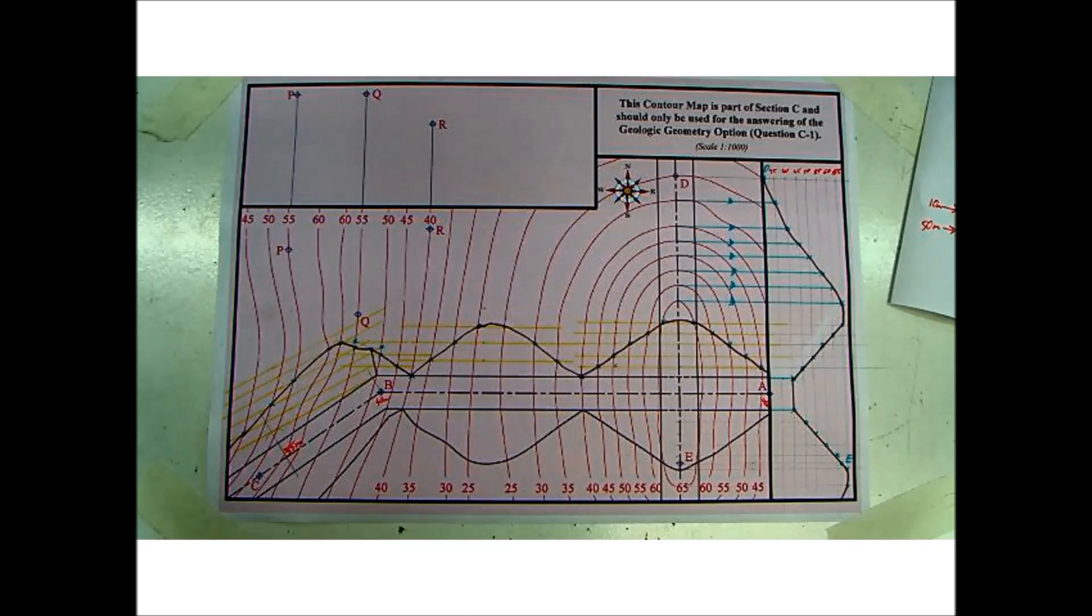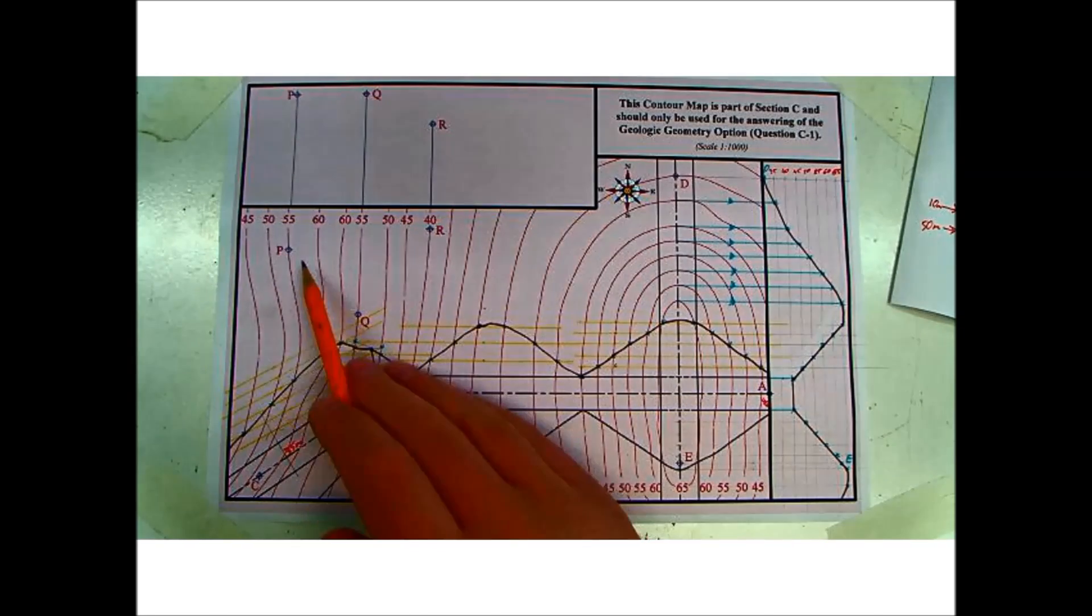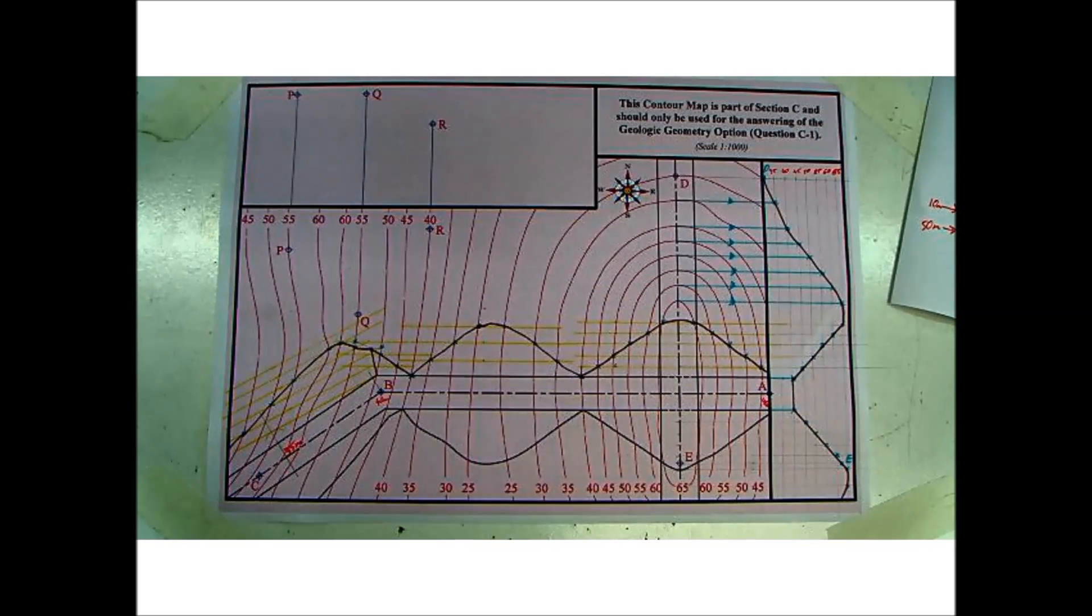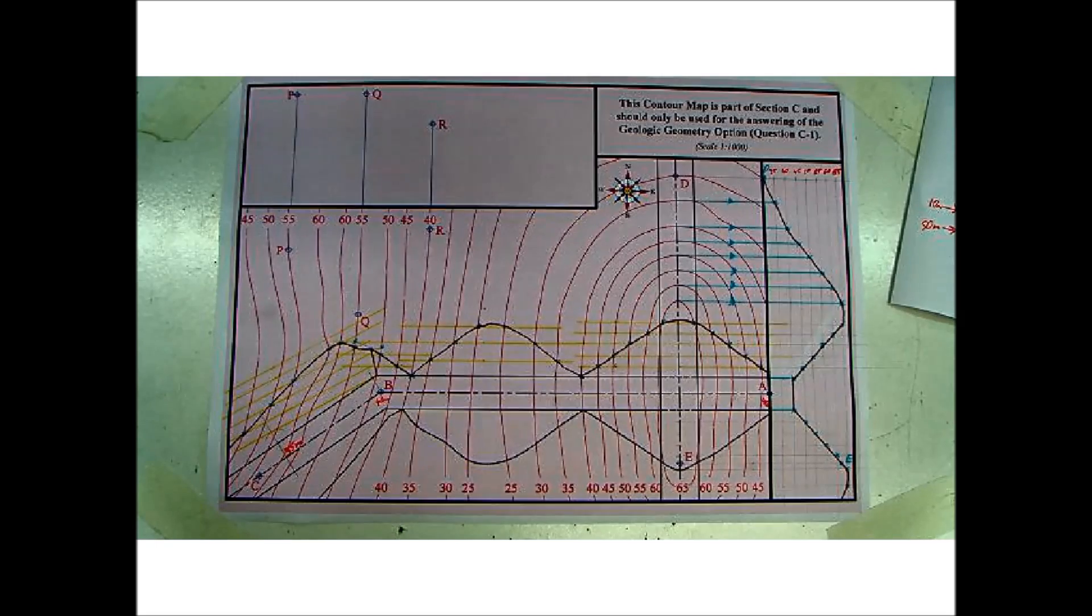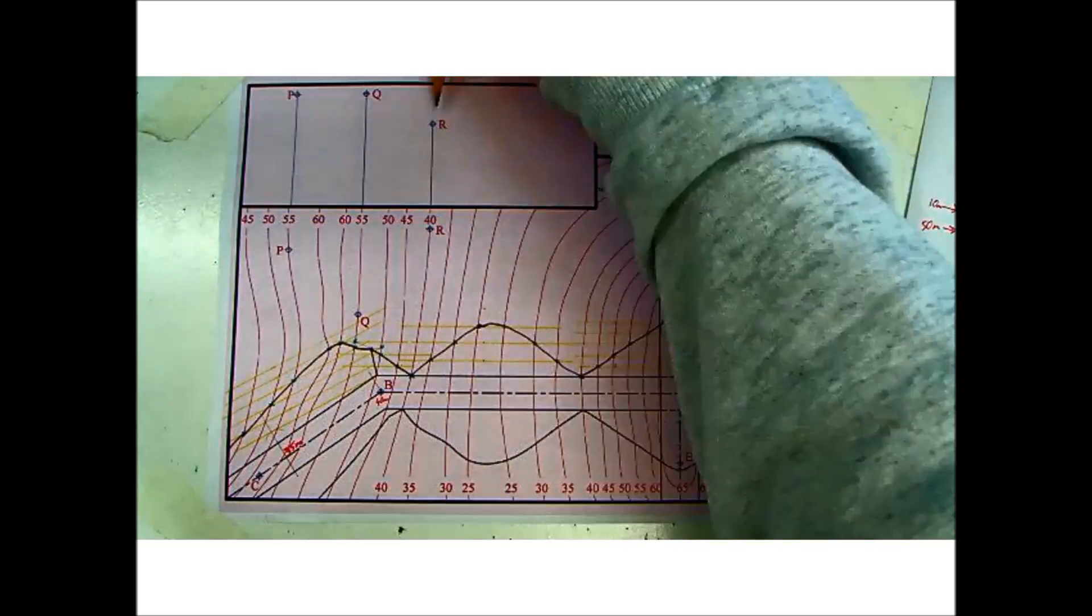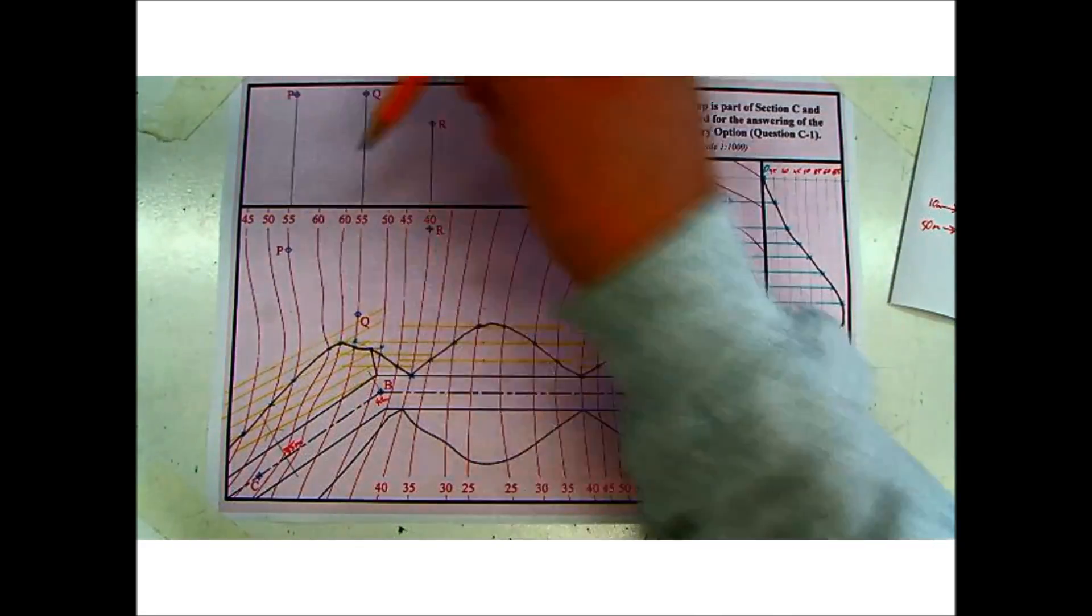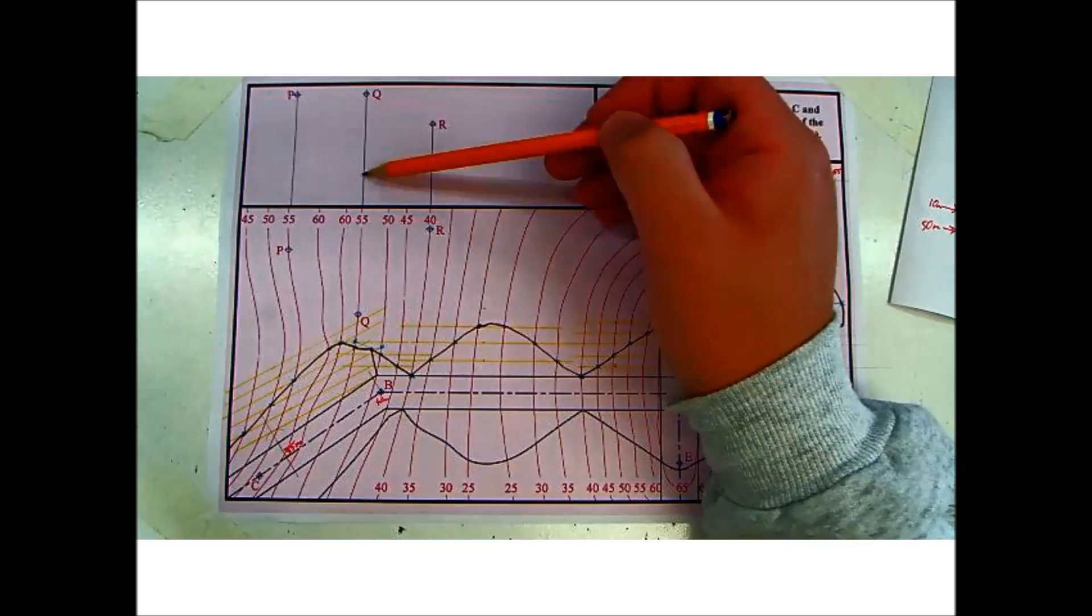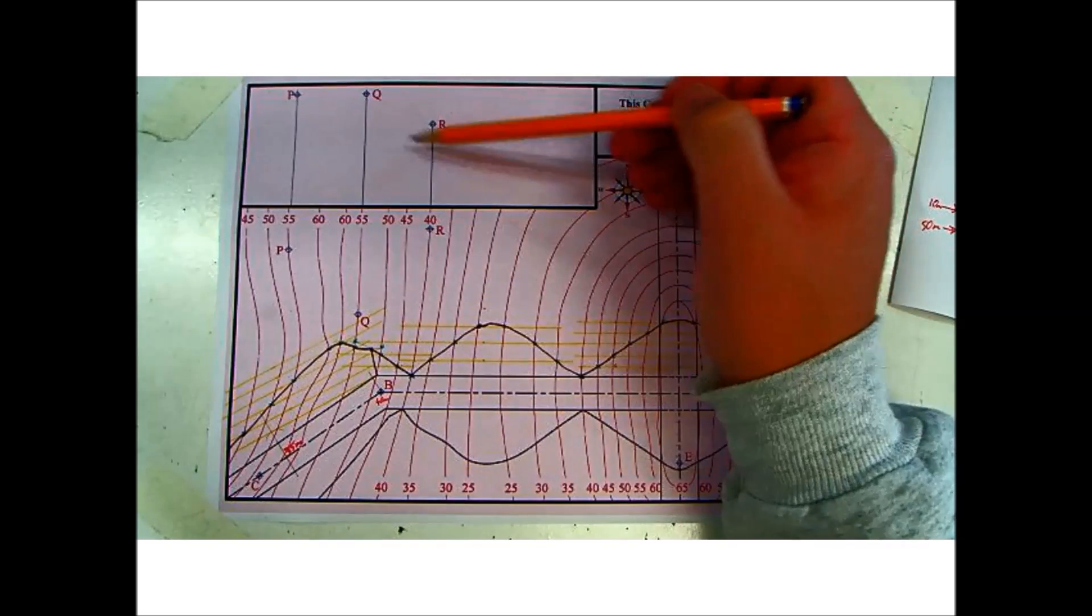So on the map, points P, Q and R are three points on the surface of the earth. So P, Q and R are points all on the surface on their contours 55, 55 and 40. Vertical boreholes drilled at these three points are shown in elevation in the space provided above the map. And they reveal the top surface of the stratum of ore at distances of 5 meters, 35 meters and 10 meters below P, Q, R respectively. So at each one of these points, they have drilled straight down into the ground. And they've hit a layer of ore at 5 meters, 35 meters and 10 meters respectively. So that's 5, 35 and 10.